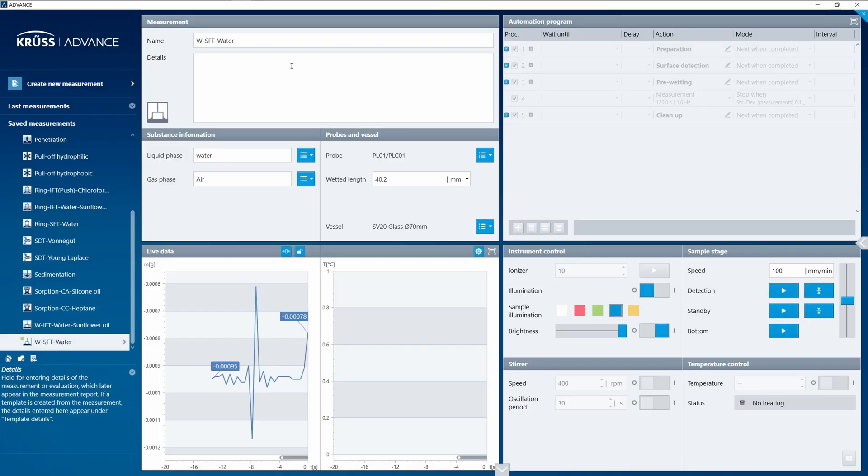Now when you open a measurement up, Advance guides you through the logical progression of an experiment. You start at the top left with giving some details about the instrument and the measurement itself, maybe the sample you're measuring.